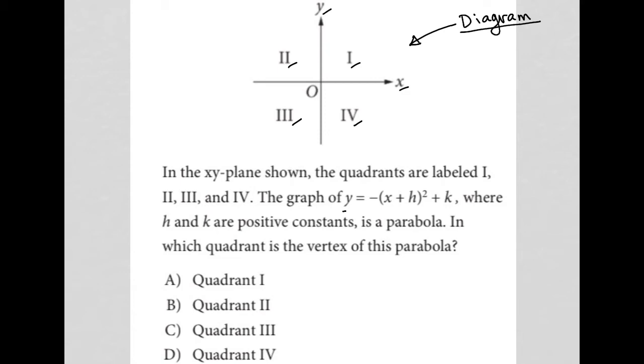The graph of y equals negative x plus h squared plus k, I'm going to write that down, y equals negative (x + h)² + k.